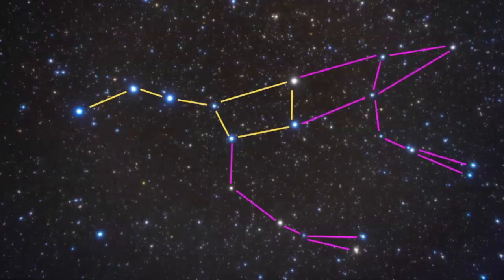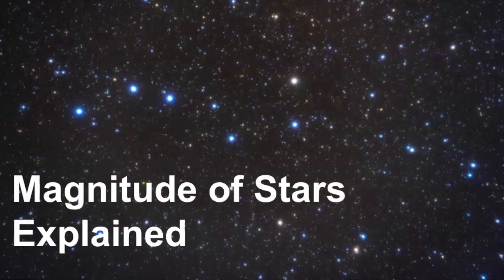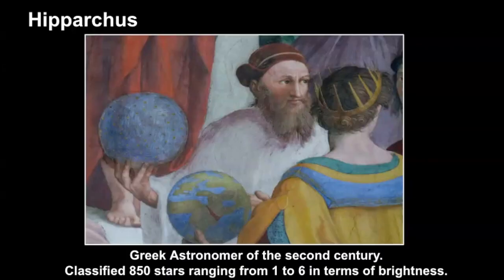Here is the actual full constellation of Ursa Major, and as you can see these stars are of different brightnesses. In this video we are going to explore what the magnitude of a star really means and how it's changed over the years, starting with a quick history of star magnitude and how it came to be.